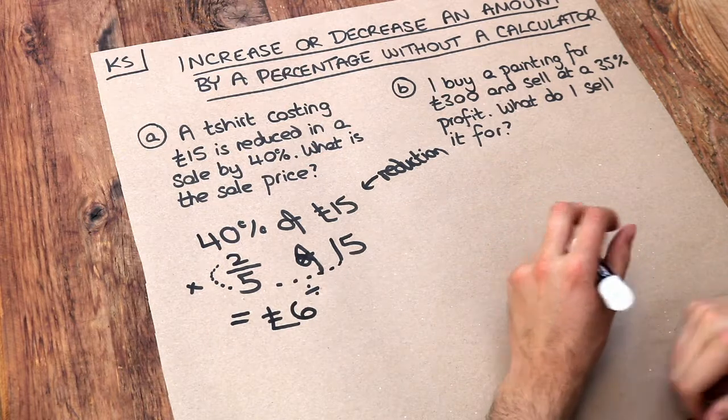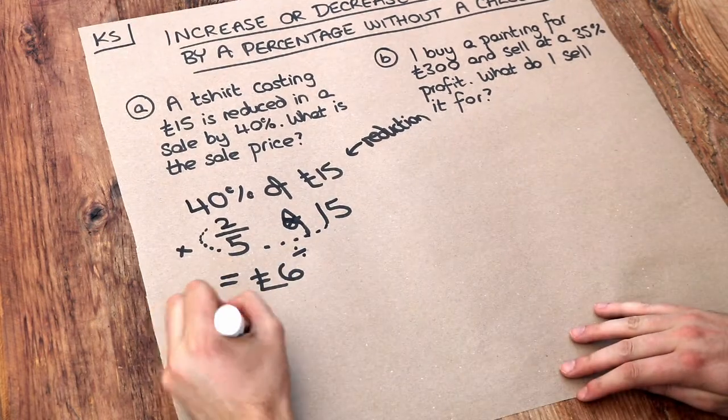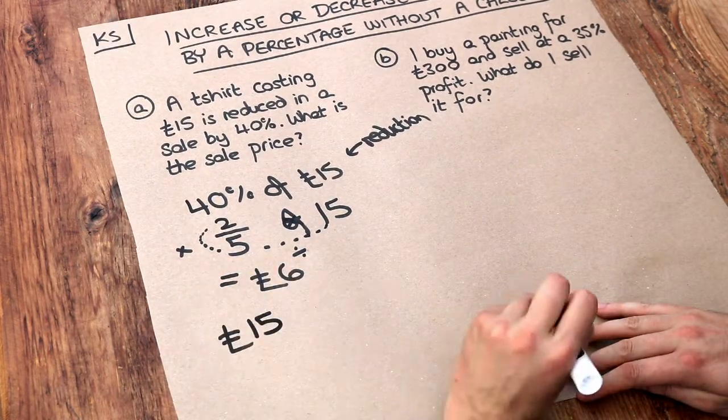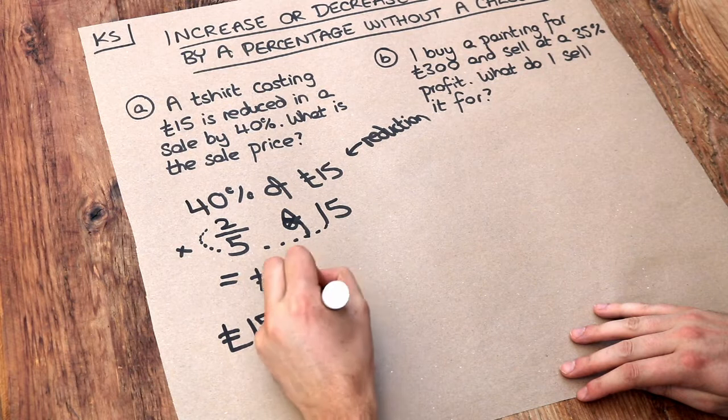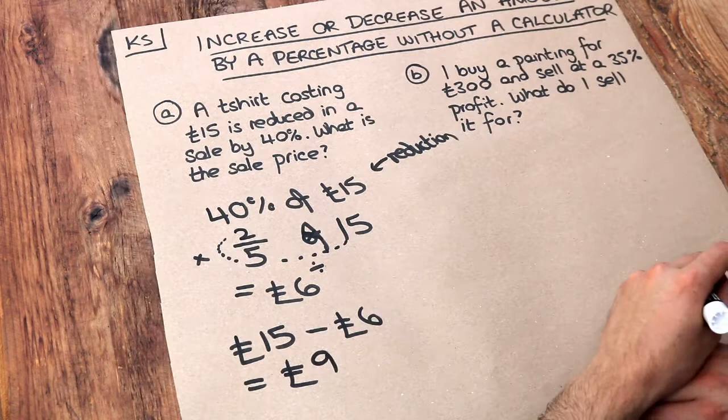So it's been reduced by 40%, so it's been reduced by £6. So if you have a t-shirt that was £15 but it was reduced by £6, you just subtract the values and that gives you a new sale price of £9.